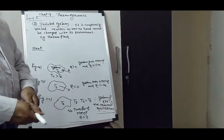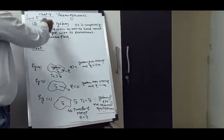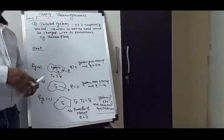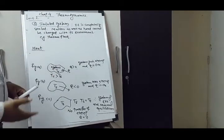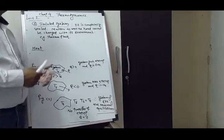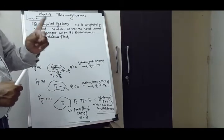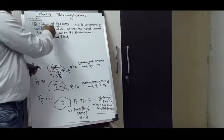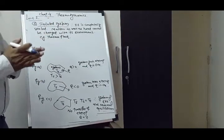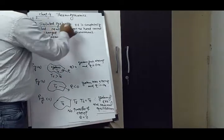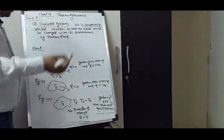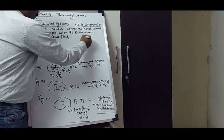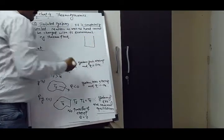Hello, good morning students. This is lecture number two for the second chapter on thermodynamics. In the first lecture we explained what is a system, what is a surrounding, and the different types of systems: closed system, open system. Now the third one is the isolated system.